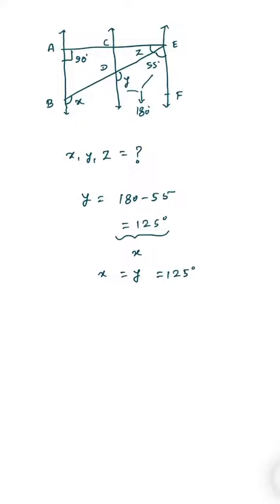Now since AB and EF are parallel lines, the sum of 90 degrees, g and 55 will be equal to 180.